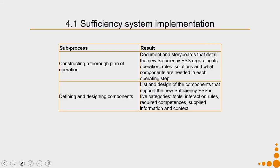Once the system concept is done, we go into the detailing phase. In sufficiency system implementation we construct a thorough plan of operation, detailing the system with storyboards that detail the new sufficiency PSS regarding its operation, roles, solutions, and what components are needed in each operating step. Then we define and design the components that support the new sufficiency PSS in five categories: tools, interaction rules, required competences, supplied information, and context.